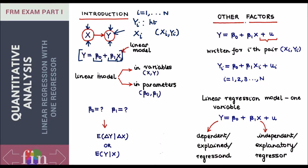Now let's come back to the math. The linear model we are dealing with is y equals beta-naught plus beta-1 times x. When you open any textbook on econometrics or regression, the first thing it will teach you is that linearity in terms of how a model is specified can be of two types: a linear model in variables, or a linear model in parameters.